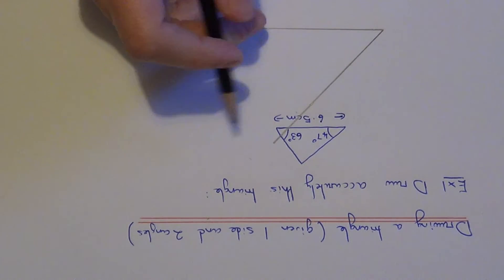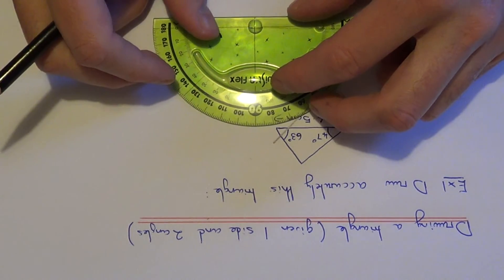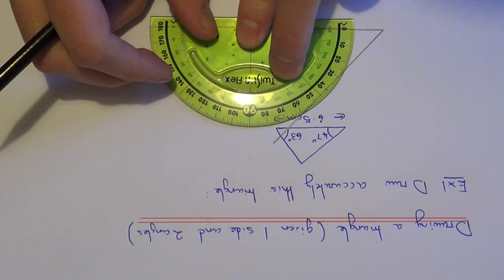Finally, we just need to measure the 63-degree angle. That is on the right-hand side of the line.